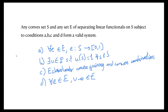Going through these conditions: every effect in E maps S to the interval [0,1] since we want probabilities. There exists a unit effect U such that U(s) = 1 for every state. E is closed under coarse graining and convex combinations. And for every effect there exists a complement effect so that all effects can belong to a measurement.